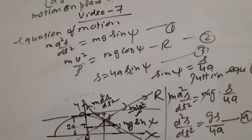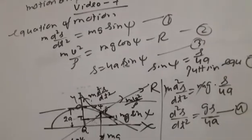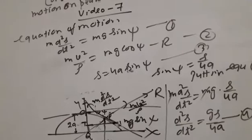For the cycloid, s = 4a·sinψ (equation number 3), so sinψ = s/(4a). Substituting into equation number 1: m·d²s/dt² = mg·s/(4a). Cancelling m, we get d²s/dt² = g·s/(4a) — this is equation number 4.